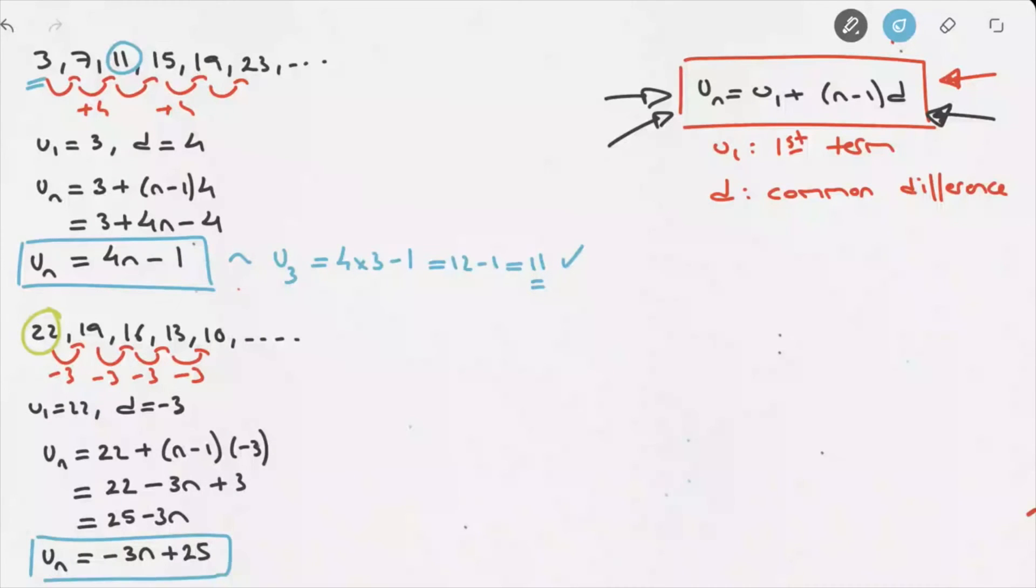Now, let's just go ahead and check. Let's say we wanted to calculate the third term, or the fourth term. Let's say for the fourth term. So, we just replace n by 4, and that would lead us to negative 3 times 4, plus 25, which leads us to negative 12 plus 25, which equals 13. And looking at our sequence, we can see that the fourth term was definitely 13. So, this sequence's formula works.